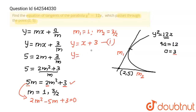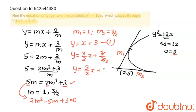The second tangent is found by putting m = 3/2: y = (3/2)x + 3/(3/2). The 3s cancel and 2 goes to the numerator, giving y = (3/2)x + 2. This is our final answer — the second tangent possible. Thank you, students.